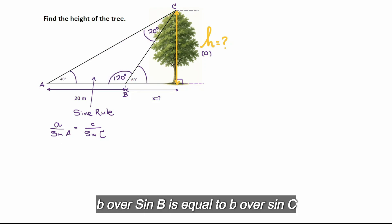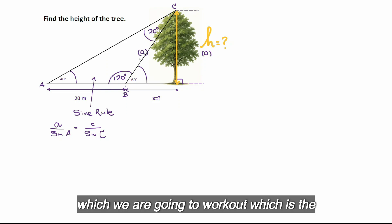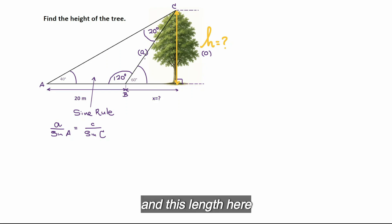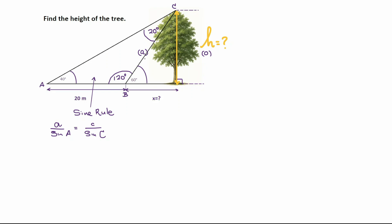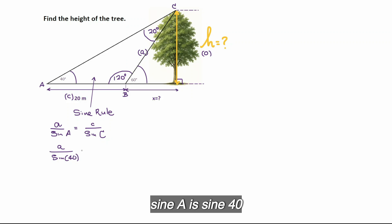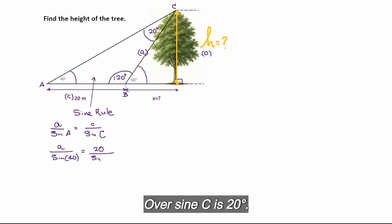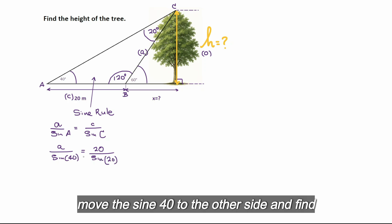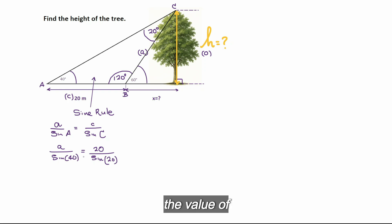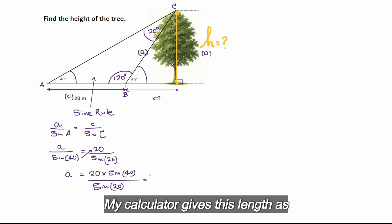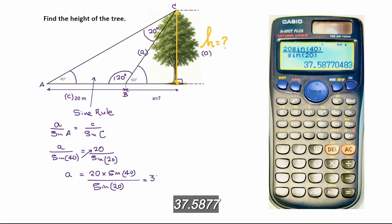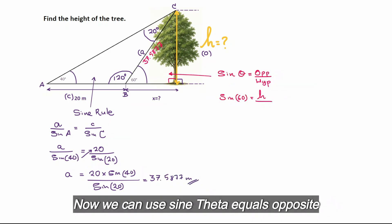Now we are going to apply the sine rule for this triangle: a over sin A equals b over sin B equals c over sin C. This length here is lowercase a, which we are going to work out — that is the length BC — and this length here, 20 meters, is your c. Substituting the values: a over sin 40 equals 20 over sin 20. I can easily move sin 40 to the other side and find the value of a. My calculator gives this length as 37.5877 meters.